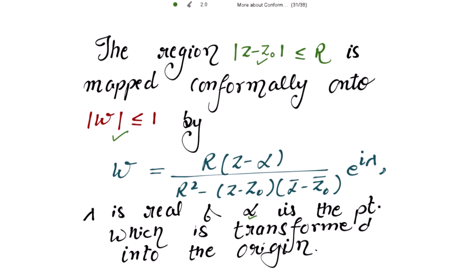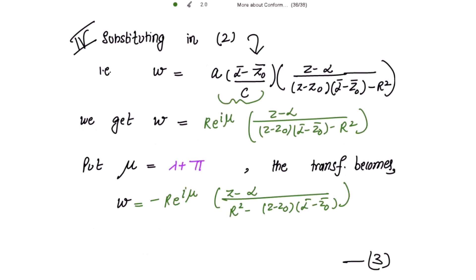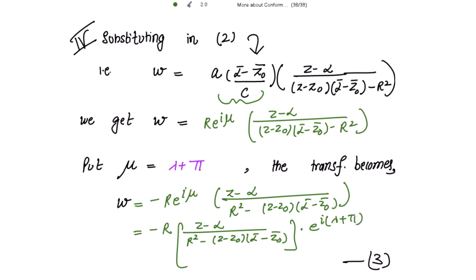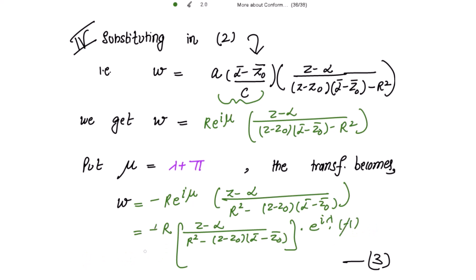Setting μ = λ + π, we write e^(iμ) = e^(i(λ+π)) = e^(iλ) · e^(iπ). By Euler's formula, e^(iπ) = cos π + i sin π = -1. So the minus sign from e^(iπ) cancels with the minus sign taken from the denominator, and we obtain the desired transformation.